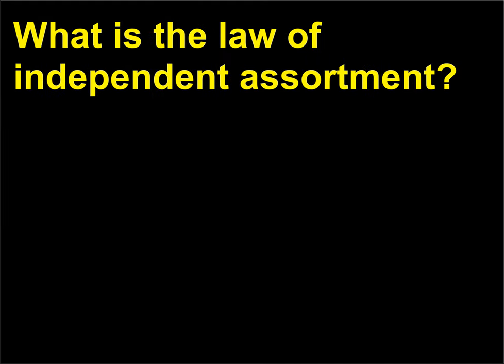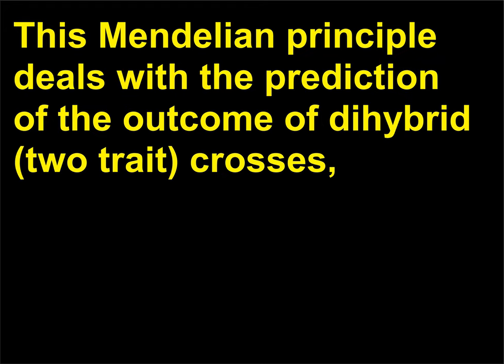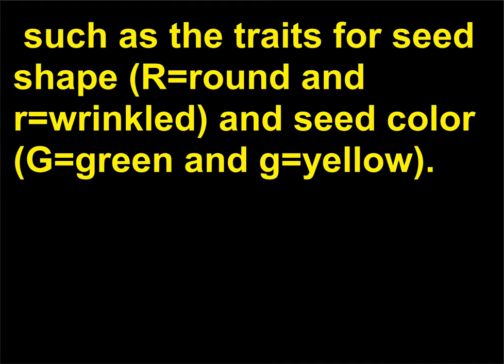What is the law of independent assortment? This Mendelian principle deals with the prediction of the outcome of dihybrid, two-trait, crosses — such as the traits for seed shape (R equals round and r equals wrinkled) and seed color (G equals green and g equals yellow).